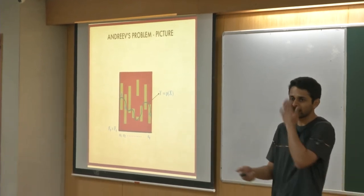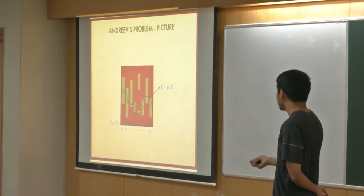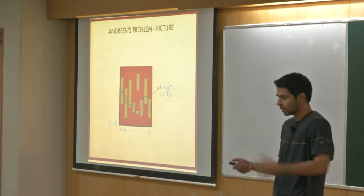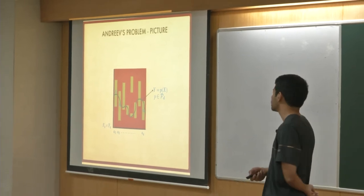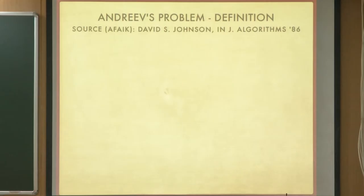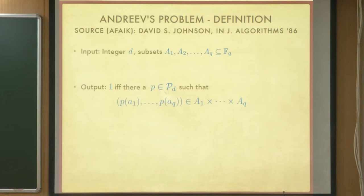This is a function: it is 1 if there is some polynomial that passes through all these sets, and 0 otherwise. The degree must be restricted, because as long as A_i is non-empty, there is always some polynomial that passes through them. So this is really the problem — I will define it formally. You are given an integer d as the degree and your subsets A_1 to A_q, and output 1 if there is a polynomial such that on a_i it takes a value in capital A_i, such that the graph of the polynomial is completely contained in these sets.